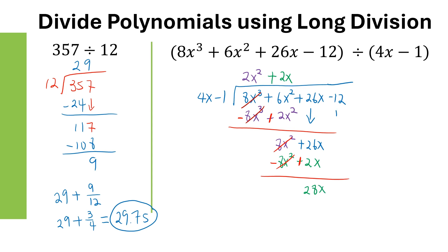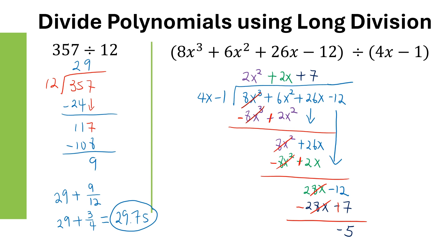Bring down the last term, which is negative 12. Now take 28X divided by 4X, giving positive 7. Multiply: 7 times 4X is 28X, and 7 times negative 1 is negative 7. When we subtract, change the signs — 28X disappears, and negative 12 plus 7 gives a remainder of negative 5. So the final answer is 2X squared plus 2X plus 7 with a remainder of negative 5 over the divisor 4X minus 1.